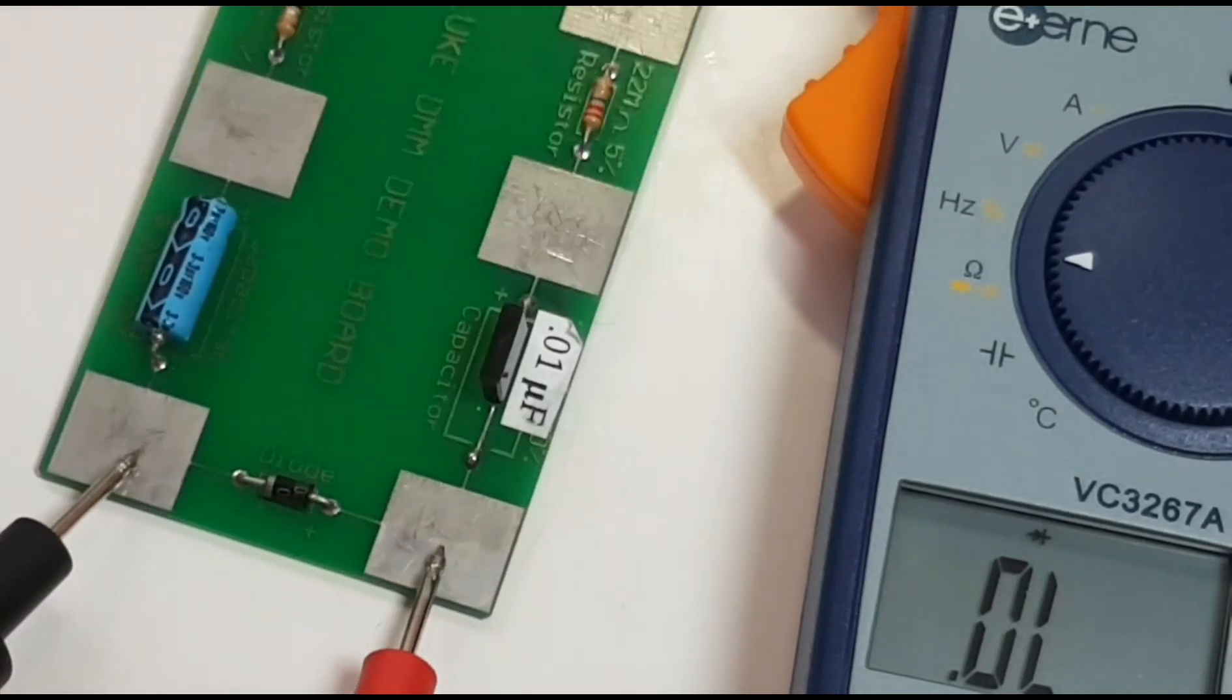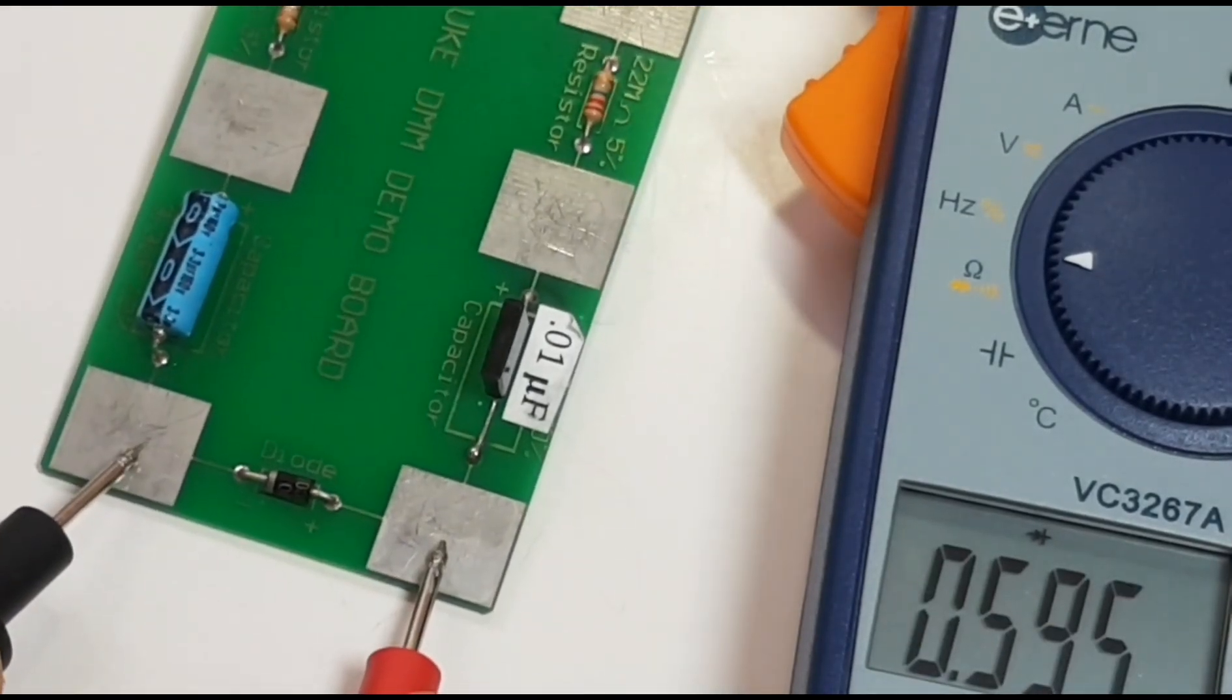Finally, checking a standard diode and here we see the forward voltage drop, no problems there.